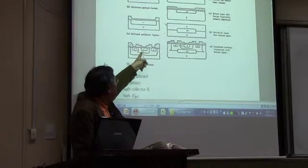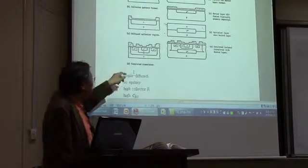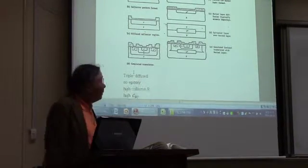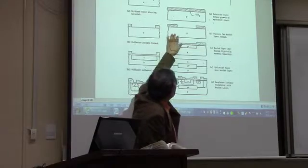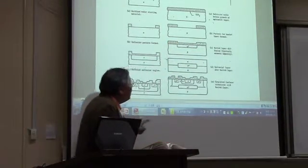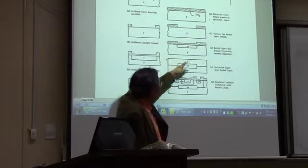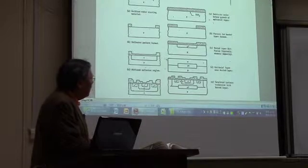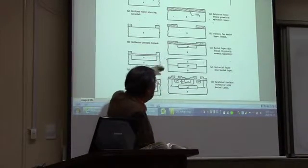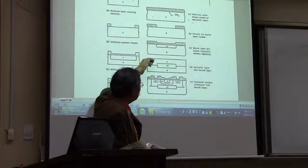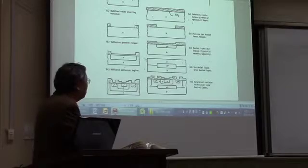Then we make a P-minus for the base — the second diffusion. Finally, we have N-plus emitter diffusion, so that is a triple diffusion. In a double diffused bipolar transistor, we start out with a P substrate but do the buried layer implantation N-plus. On top of it, we grow the epitaxial layer for the N-minus. Up to here, we do not carry out the diffusion process — we just do the epitaxial growth on top of the N-plus.